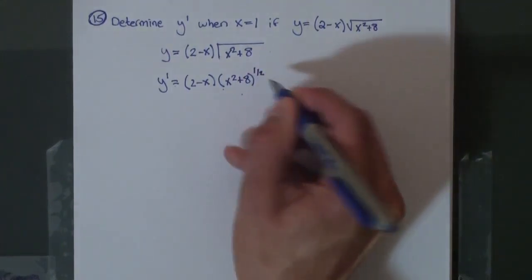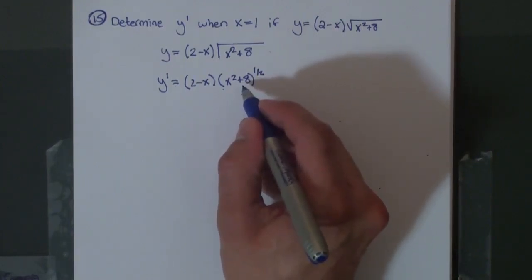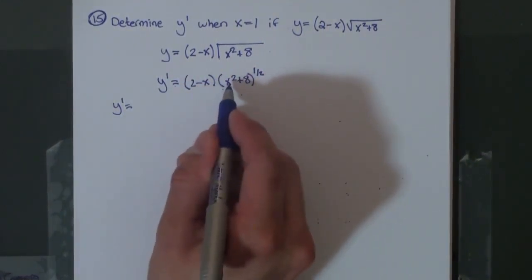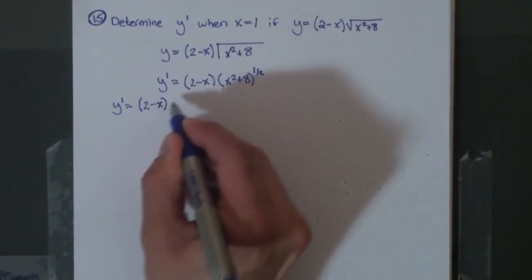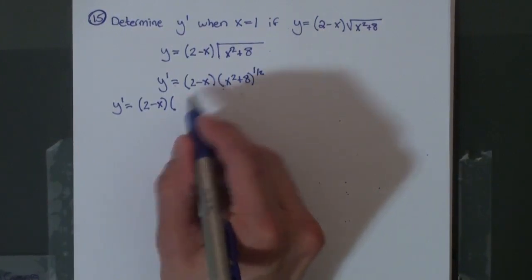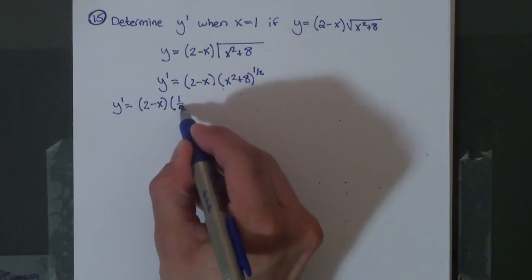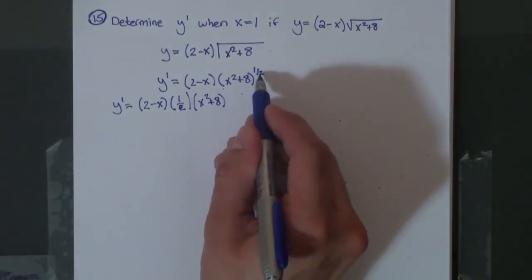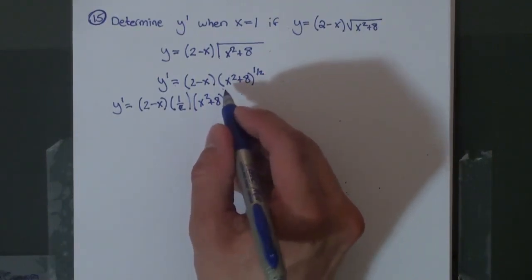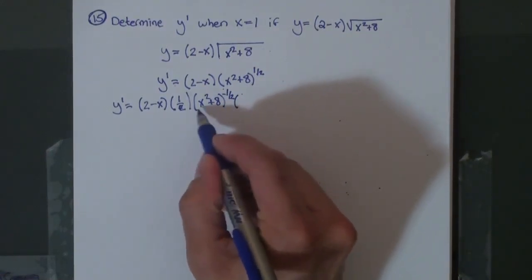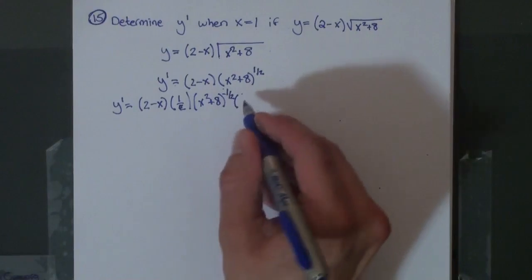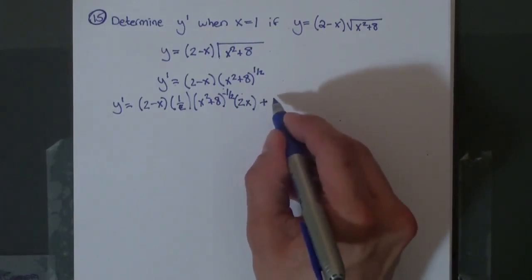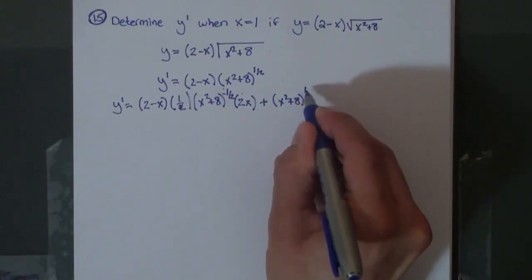We'll keep the 2 minus x the same and rewrite the square root of x squared plus 8 as x squared plus 8 raised to the 1 half. This will make it easier to take the derivative. For y prime, we keep the first part, 2 minus x, and take the derivative of the second part — dropping the exponent gives us 1 half, keeping the inside the same. This is chain rule since we have a function inside a function. Subtract 1 from the exponent to get negative 1 half, then take the derivative of the inside, which is simply 2x.